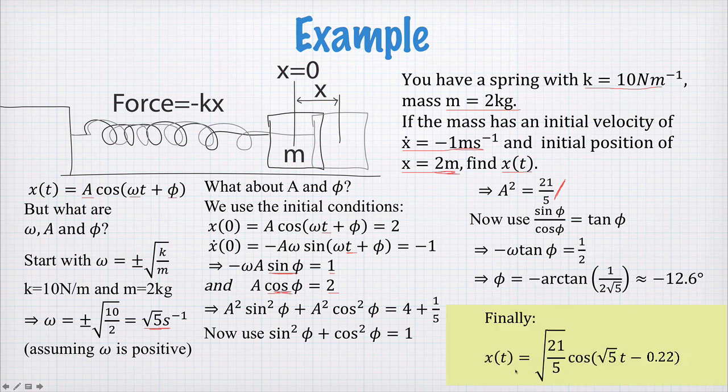So finally we get this equation here for x(t). The amplitude is given by √(21/5). The angular frequency is √5. And the phase is negative 0.22 radians, which is negative 12.6 degrees.